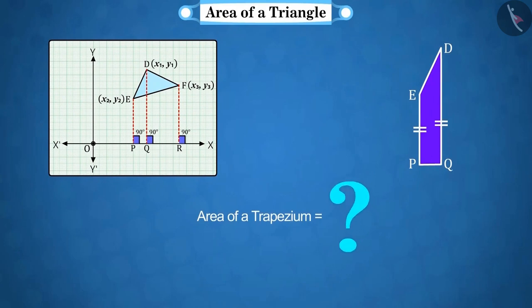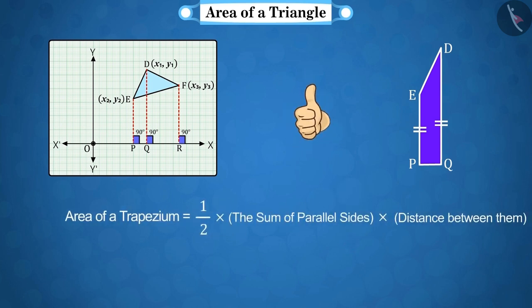Can you tell what is the formula of the area of trapezium? Good! The formula to find the area of a trapezium is 1 by 2, the sum of the parallel sides multiplied by the distance between them.